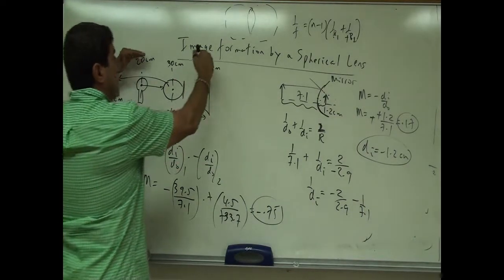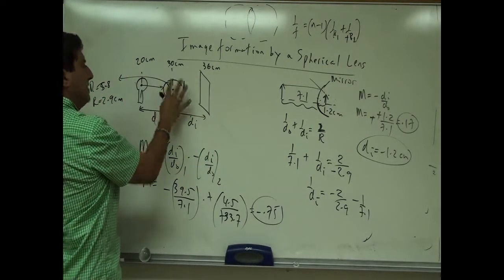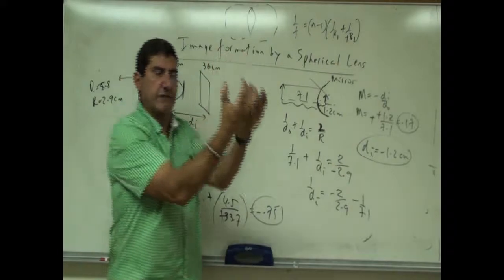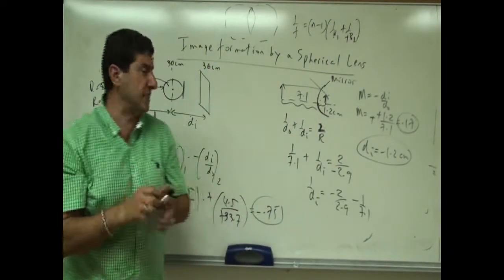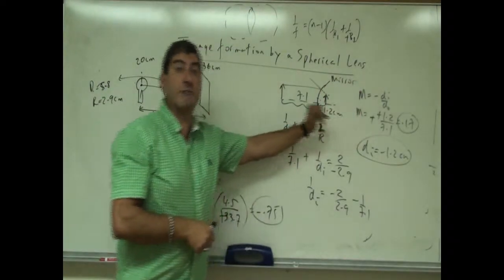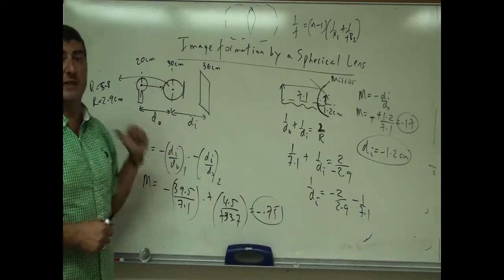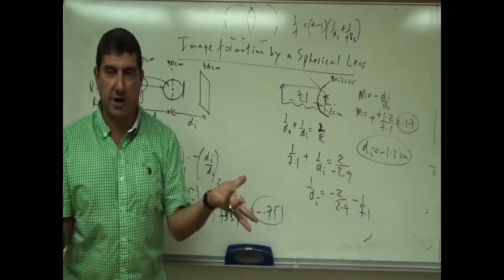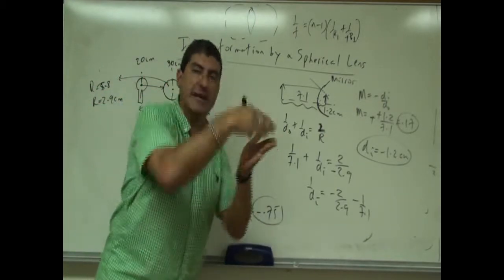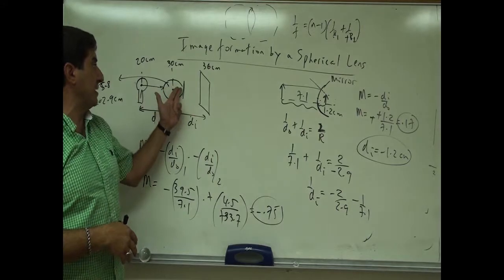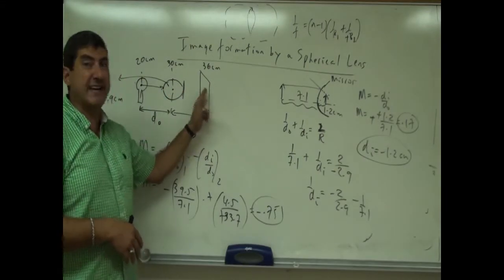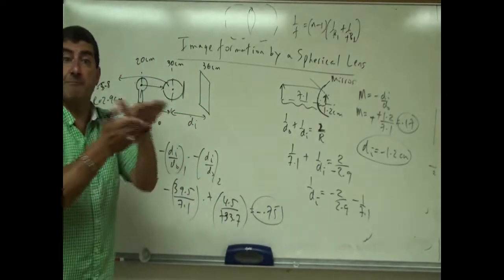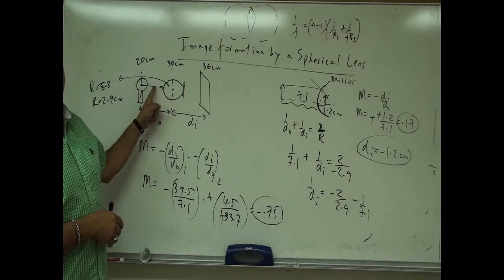Now, what if this whole thing were immersed in water? The light bulb and everything else stays the same — where would the expected final image be? Since glass's index of refraction is not much larger than water's, the light rays don't bend as much. They might converge very far away, or might not converge at all — possibly forming a virtual image on the left side.